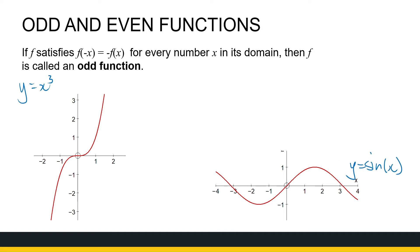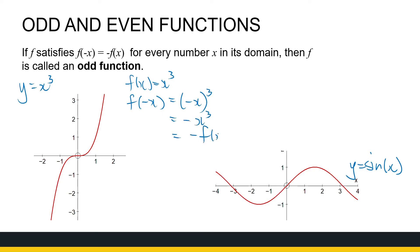Let's see why. If f of x is equal to x cubed, and I want to find f of minus x, that is minus x, all cubed, which gives me minus x cubed, which is just minus f of x. So I've shown algebraically that x cubed is an odd function. Graphically, if you look at the graph, the part on the right-hand side, if I reflect it over the x-axis and then over the y-axis, I get the part on the other side of the y-axis. So it's symmetrical, but with two reflections.